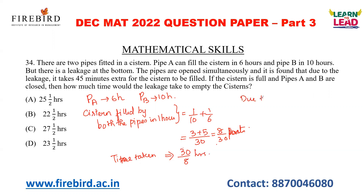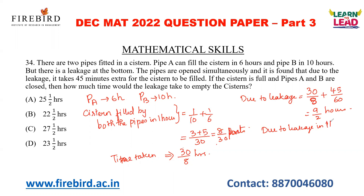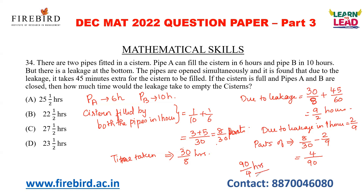But due to leakage, the cistern gets filled in an extra 45 minutes. So the actual time taken is 30/8 + 45/60 = 9/2 hours. Due to leakage, in 1 hour, 2/9 part of the tank gets filled (reciprocal of 9/2). Now, parts of the cistern emptied by leakage = 8/30 − 2/9. The LCM here is 90, giving 24 − 20 = 4, so 4/90. Taking the reciprocal: 90/4 hours. So the leakage alone will empty the whole cistern in 90/4 = 22.5 hours.